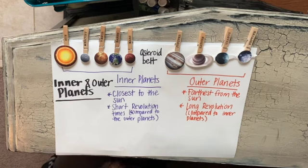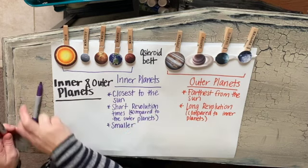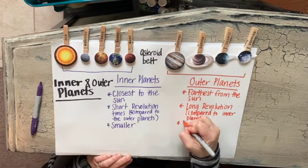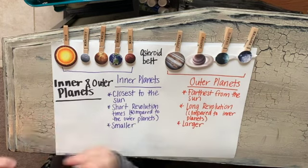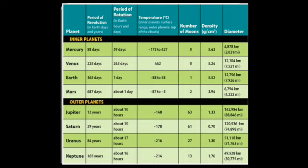Looking at the size of the inner planets versus the outer planets, we can say that the inner planets are much smaller in size than the outer planets. The outer planets are much larger — in fact, they are huge. On our chart it measures the diameter of each planet, so when we talk about size, we're looking at their diameters, or how big across each planet is.